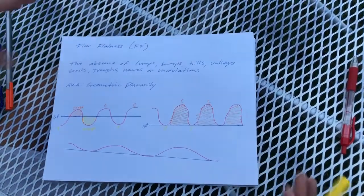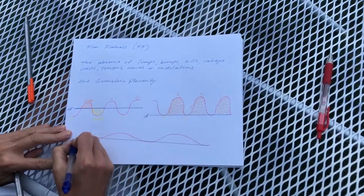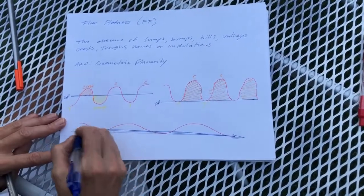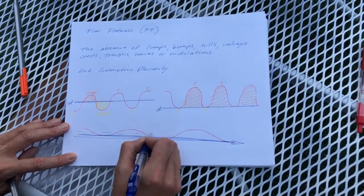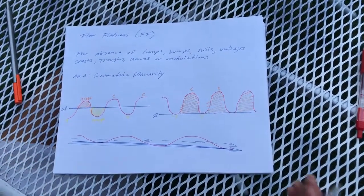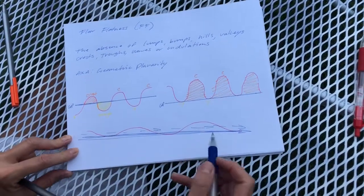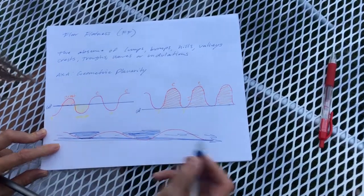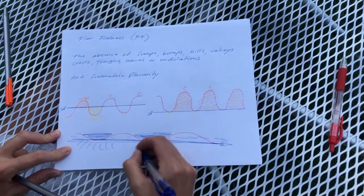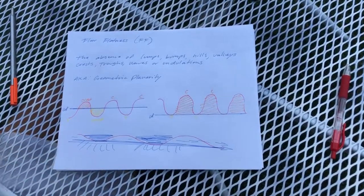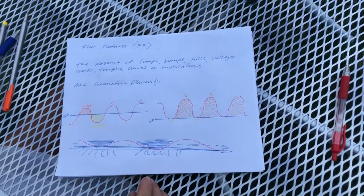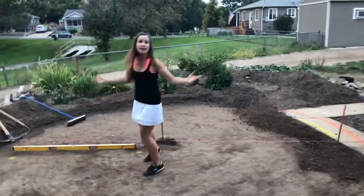Now, why does this matter? If we've got a sloped plane sloping in this direction, we want water to roll down the plane and drain away. But if you've got hills and crests and troughs, water can collect in the troughs and eventually saturate your soil below, and that can cause heaving or sinking in the flat floor that you're trying to create.